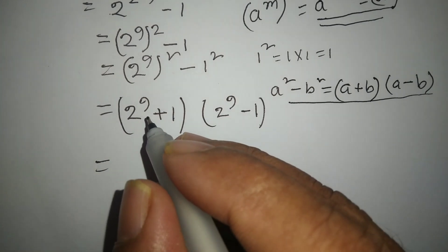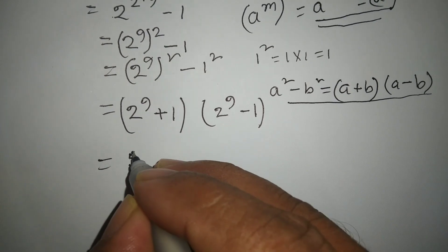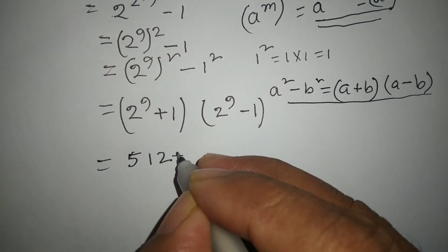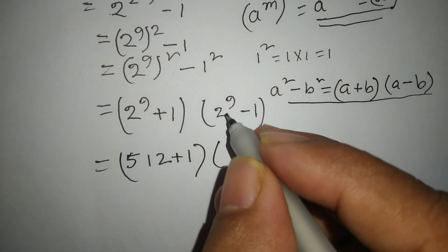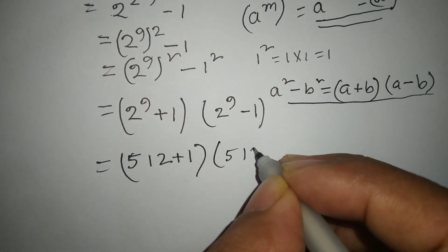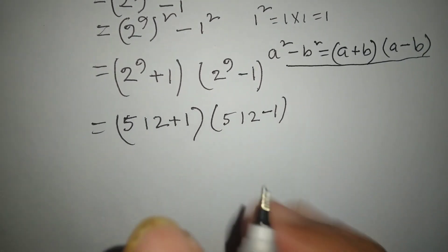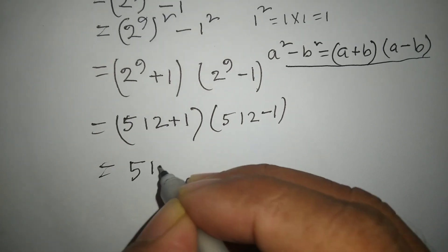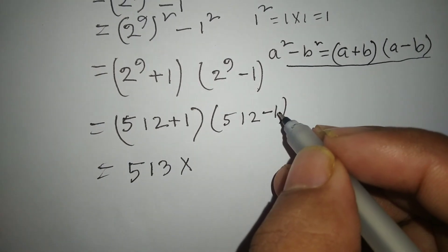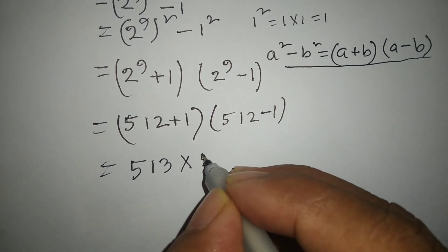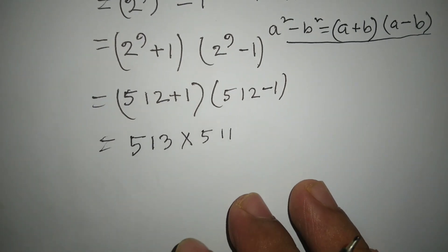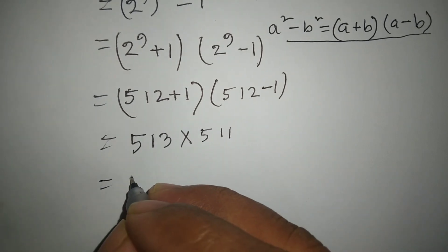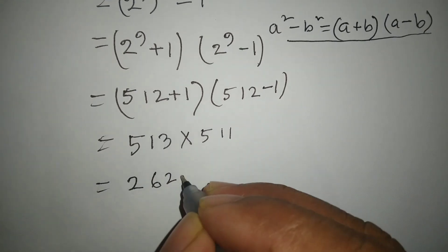We know 2 to the power 9 is 512. So we get 512 plus 1, into 512 minus 1, which equals 513 into 511, which equals 262143.